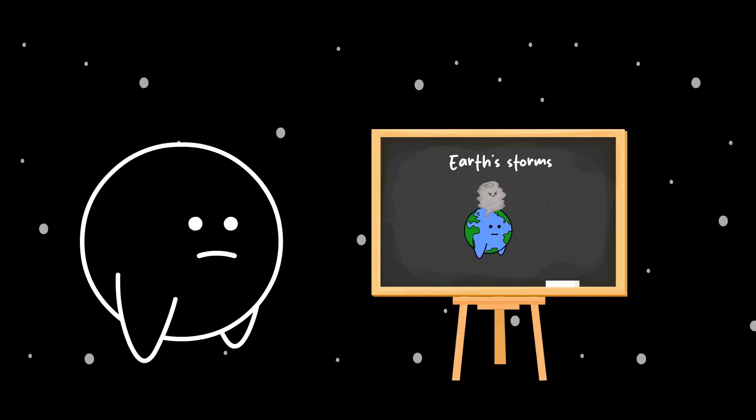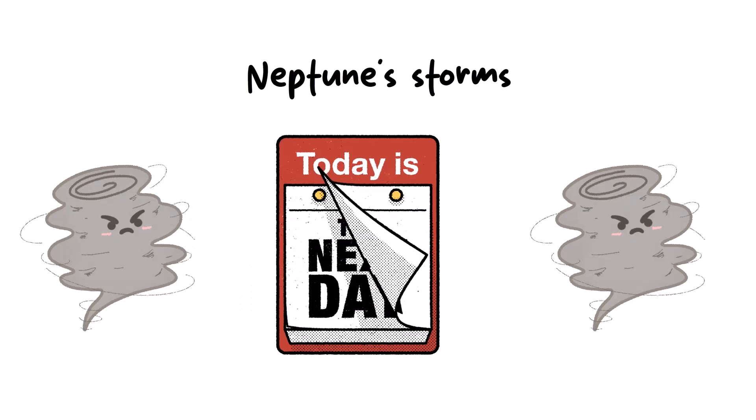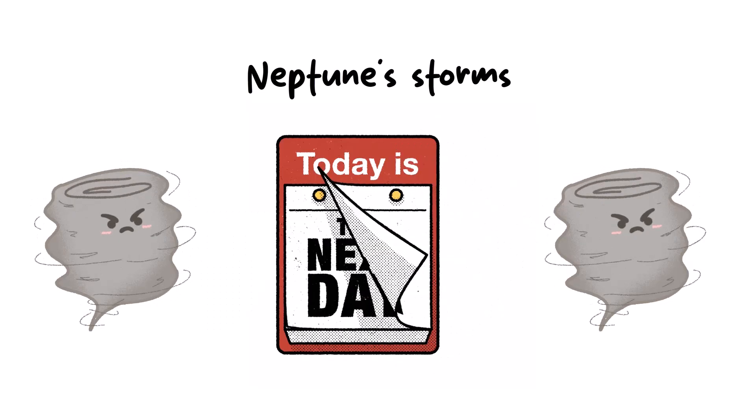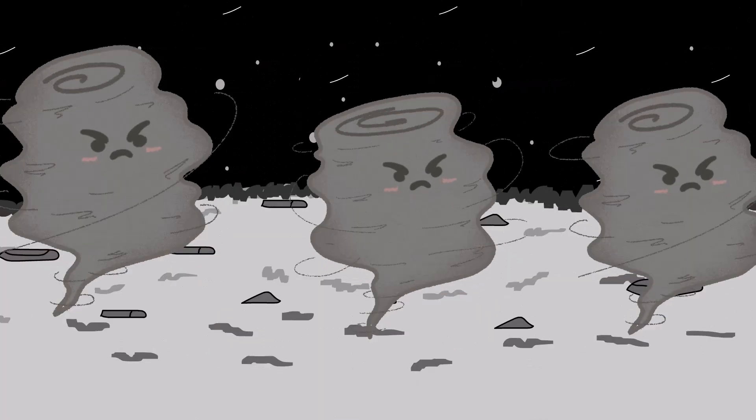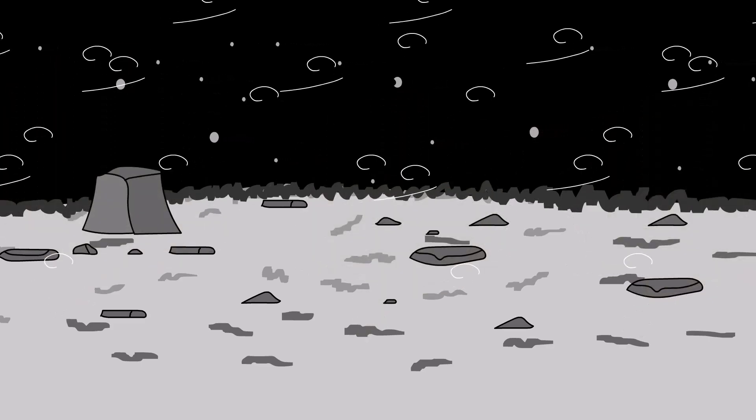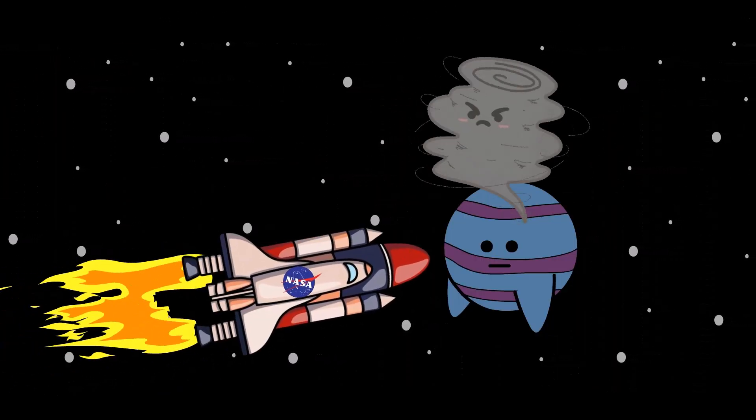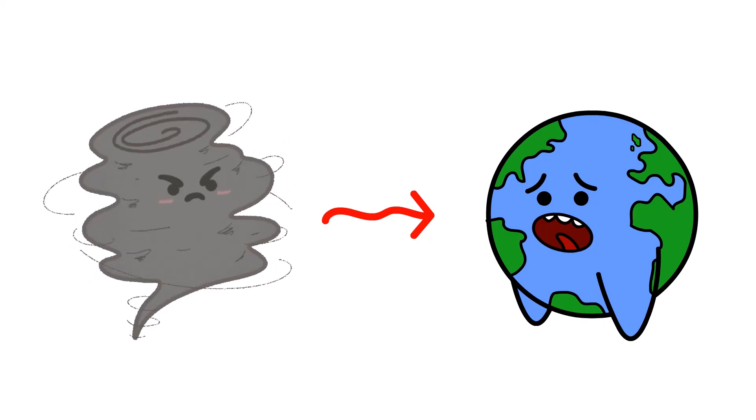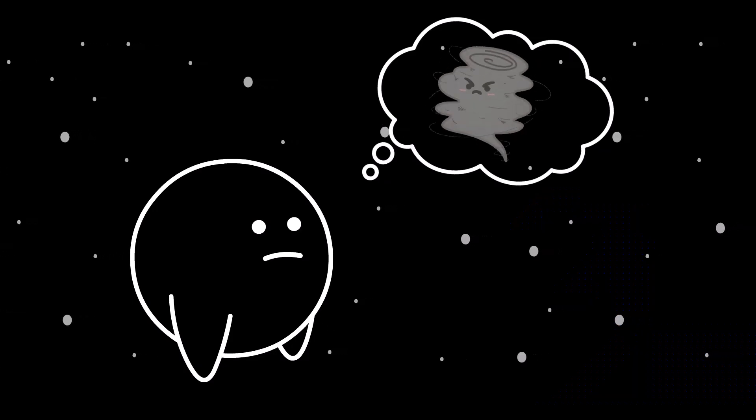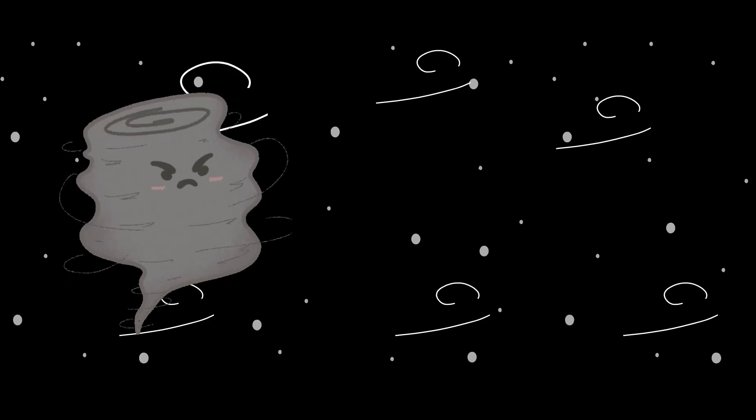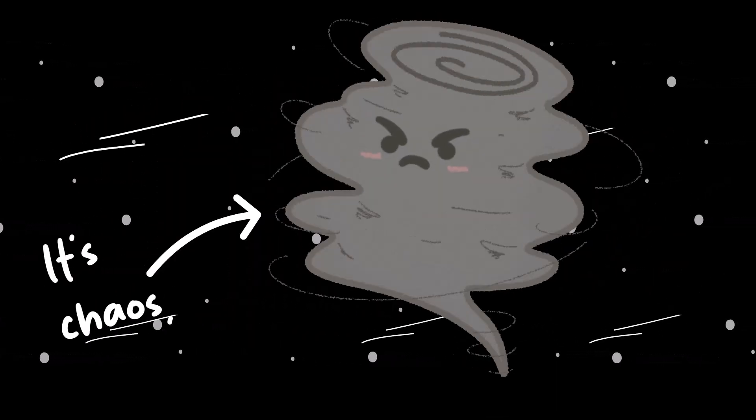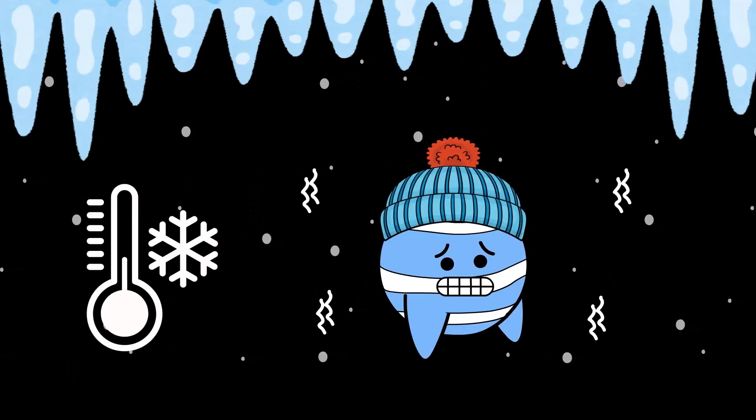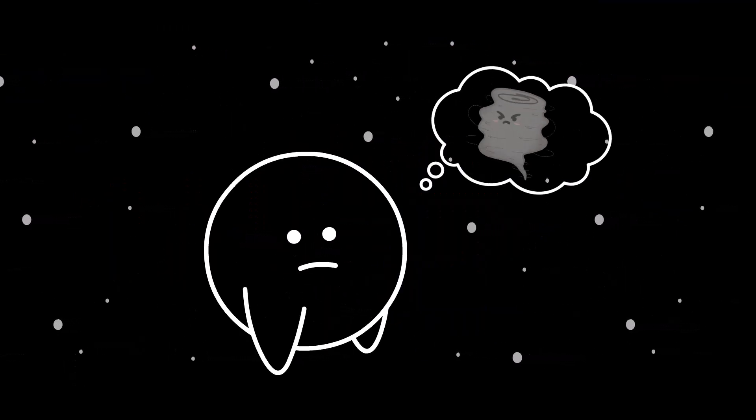Unlike Earth storms that might last a few hours or days, Neptune storms go on for years. Giant dark spots, similar to hurricanes, appear and swirl violently for long stretches of time before they randomly vanish. One of the biggest ones NASA ever saw was about the size of Earth itself, whipping winds around like a cosmic blender.